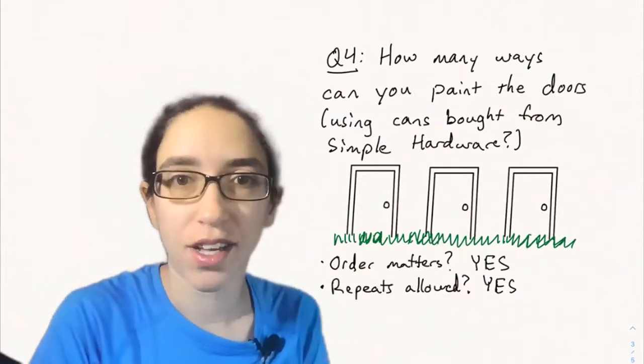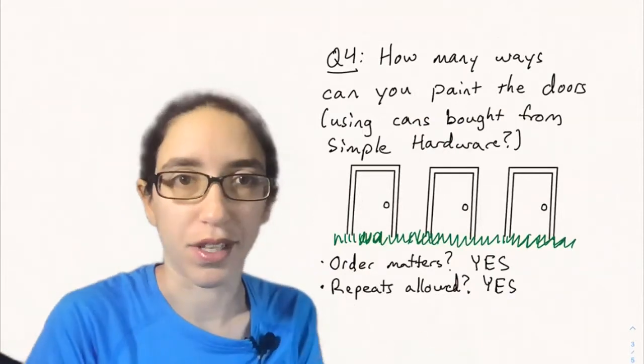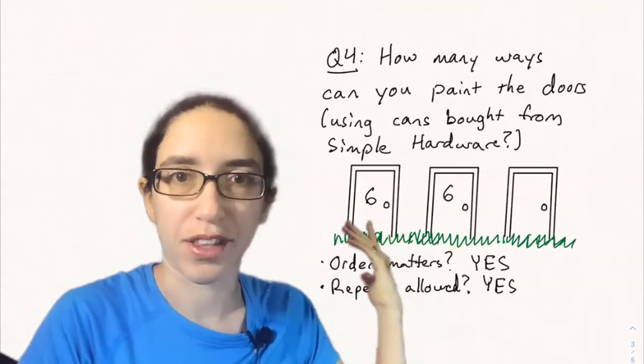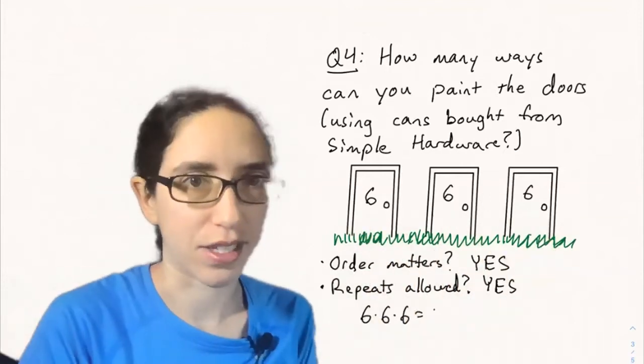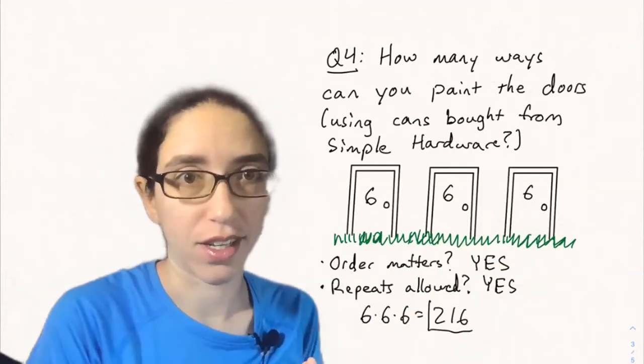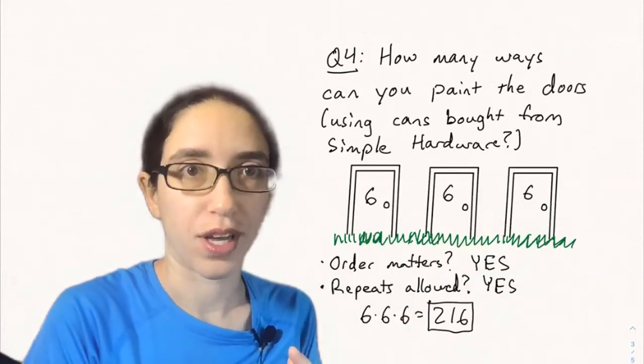This is actually the simplest case believe it or not even though there's the most possibilities. So in terms of counting there are 6 possibilities for each door and so they're just 6 times 6 times 6 or 216 possibilities for how to do this.